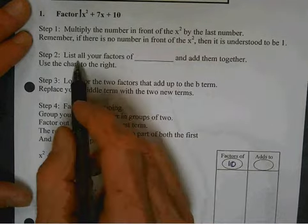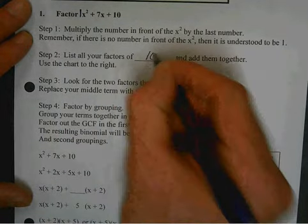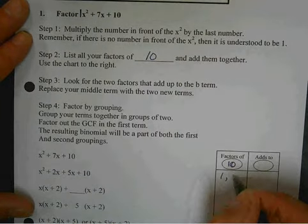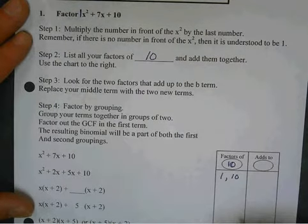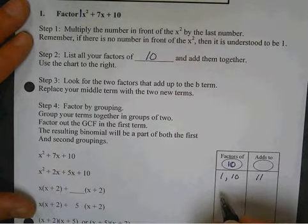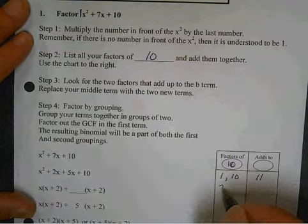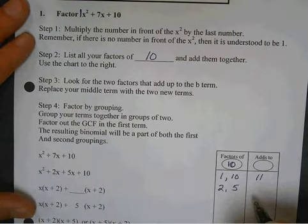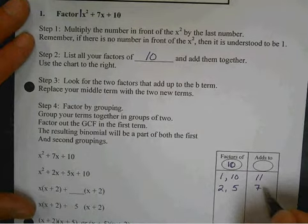Then, it says, list all your factors of 10 and add them together. So, 1 times 10 is 10, right? So, add those together, and you get 11. What's another factor of 10? 5. 2 and 5. And what's 2 plus 5? 7.